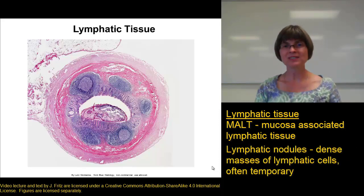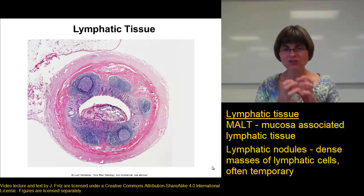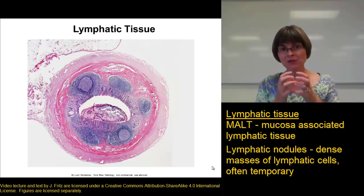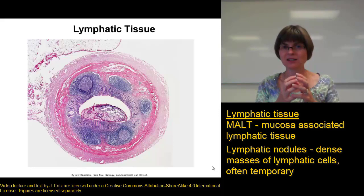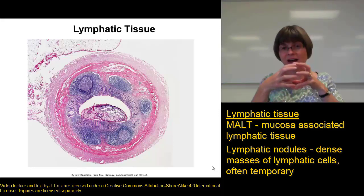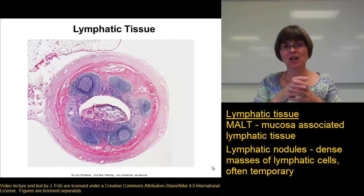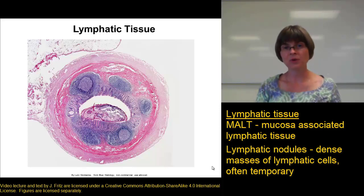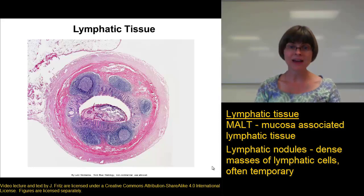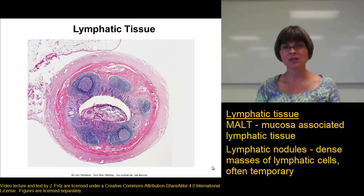Lymphatic nodules are dense masses, big collections of lymphatic cells. They're often temporary — when you encounter a particular infection, bacteria, or something that needs to be fought off, the cells divide to form a lymphatic nodule. Once the pathogen has been fought off, those cells go away and the nodule goes away. We tend to find a lot of lymphatic nodules in the lymphatic organs, such as the tonsils.